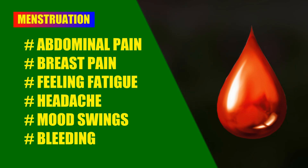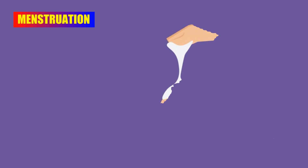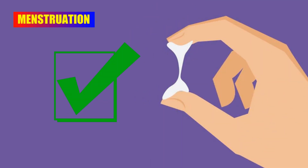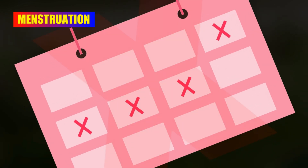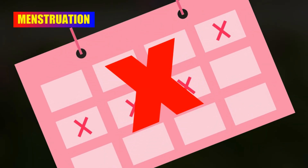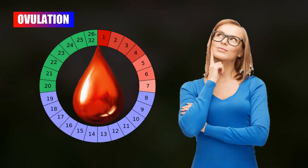Menstruation is not directly connected to ovulation. You can ovulate if you don't get your menstruation, and you can also get your menstruation if you don't get your ovulation. On the other hand, you can get ovulation without any symptoms, but bleeding is the mandatory symptom for menstruation.